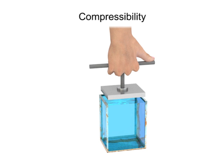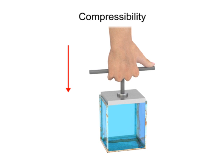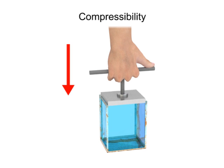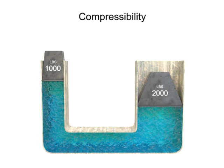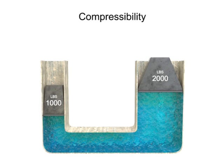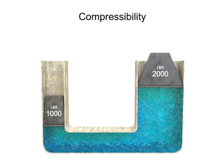Liquid fluids also have a compressibility factor. Water and petroleum-based hydraulic fluid are almost completely incompressible. They don't compress when put under pressure. This characteristic is what allows them to be used to transmit power in fluid systems.